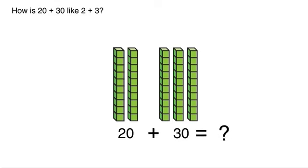There are 5 tens. 2 plus 3 equals 5, so 2 tens plus 3 tens equals 5 tens.